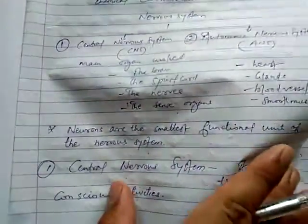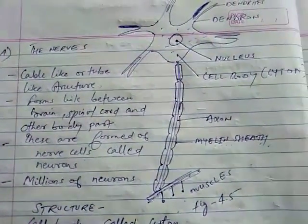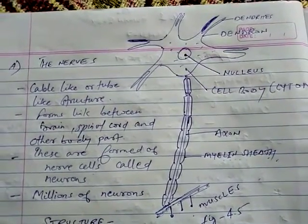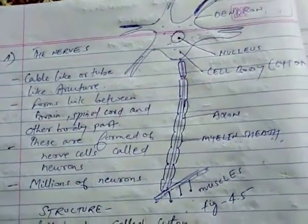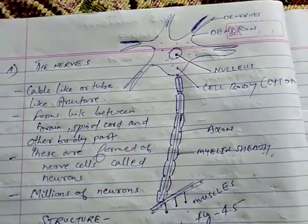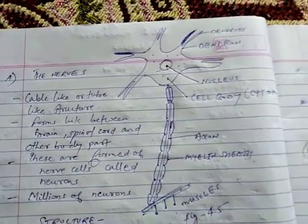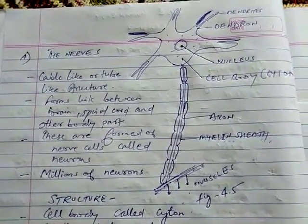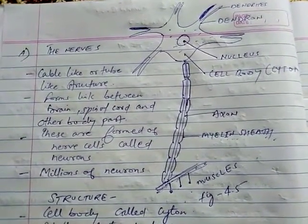The first part of the central nervous system we are going to discuss is the nerves. Nerves are made up of nerve cells, or neurons. As mentioned, neurons are the smallest functional unit of the nervous system, and nerves are made up of these nerve cells or neurons.